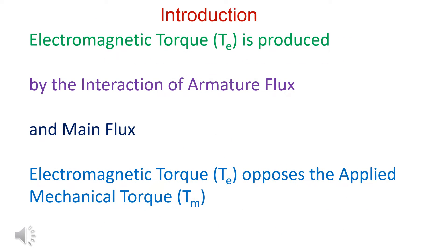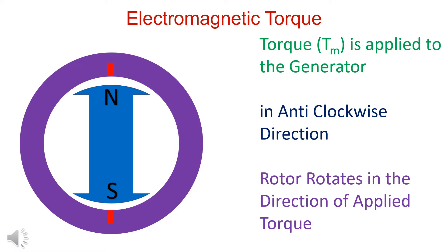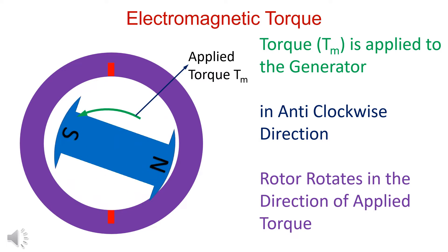The electromagnetic torque Te is produced by interaction of the armature flux and the main flux. A mechanical torque Tm is applied on the rotor. The rotor rotates in the direction of applied torque.